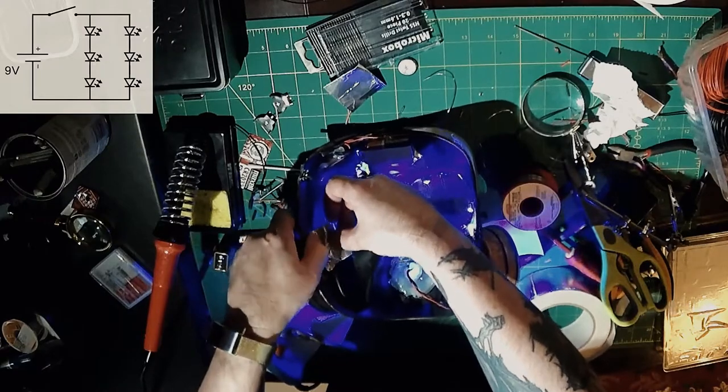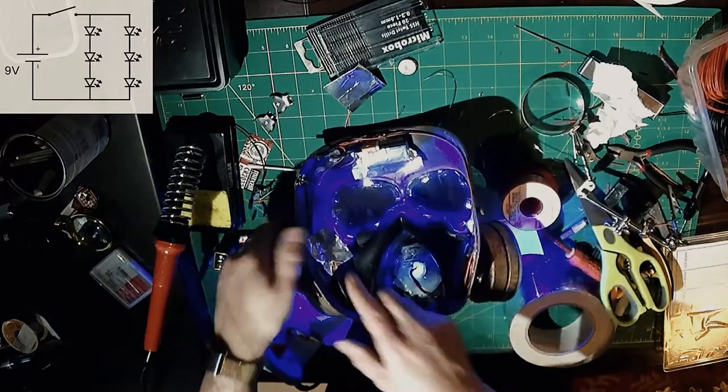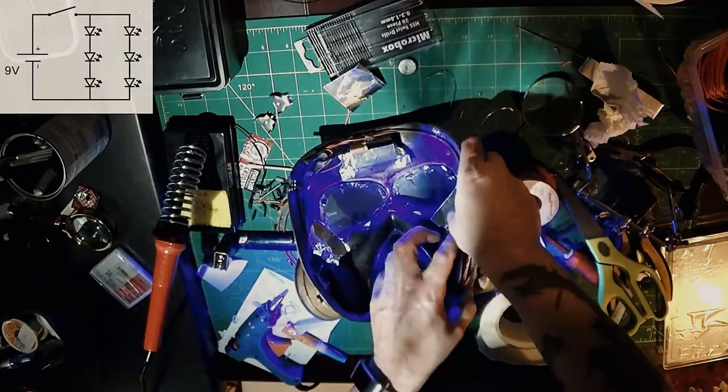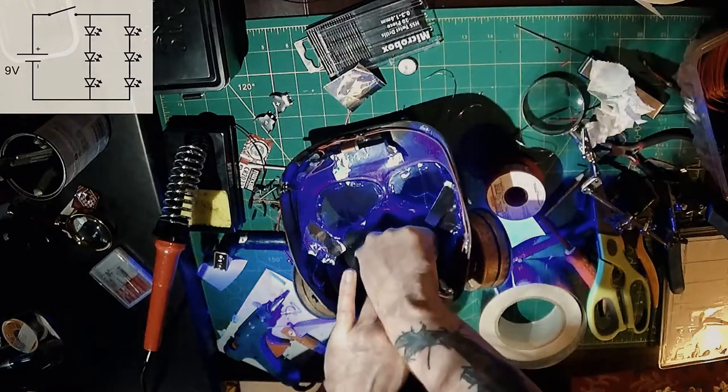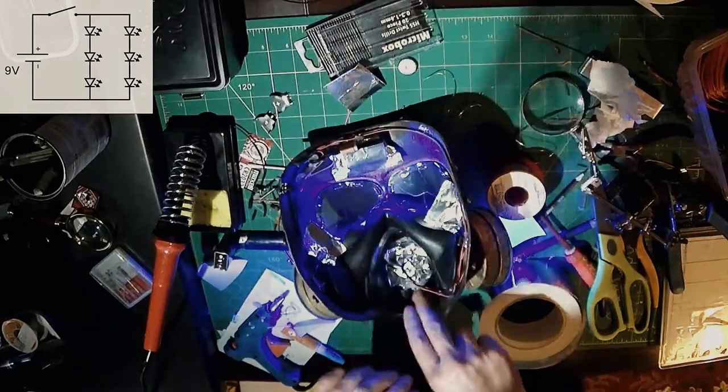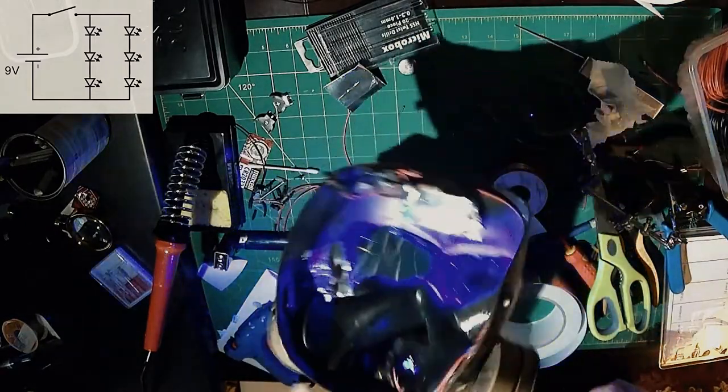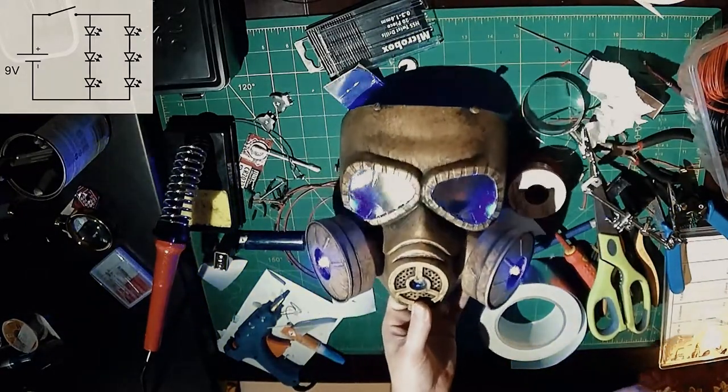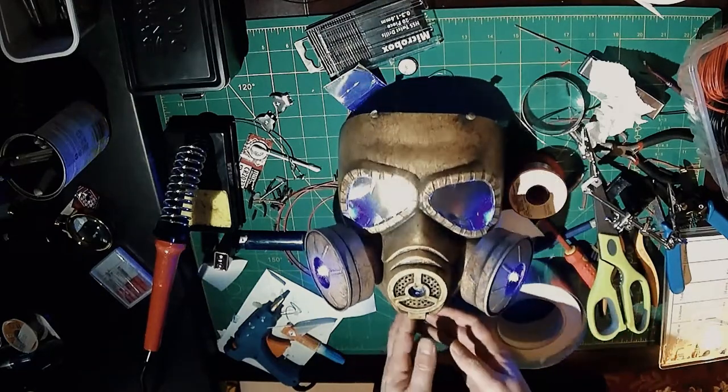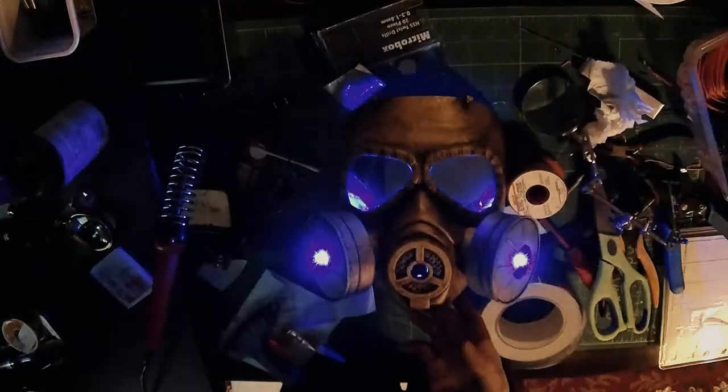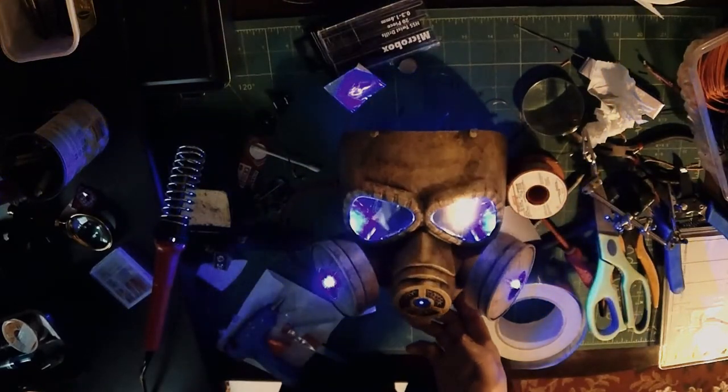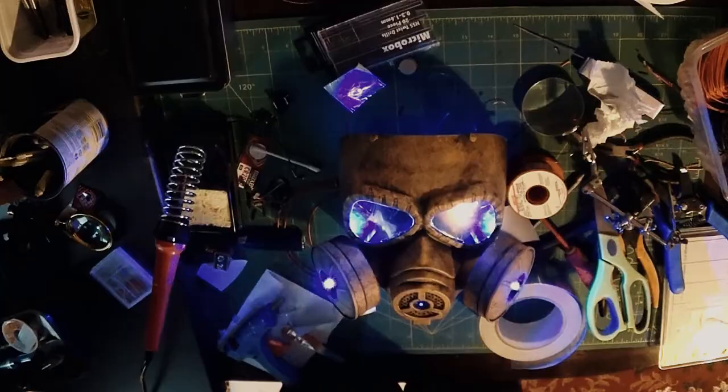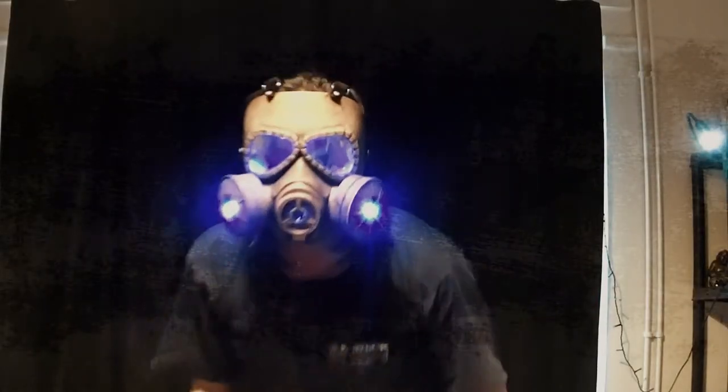I put some tin foil in there as well just to kind of shield your eyes when you're wearing the mask from those internal LEDs, plus to kind of reflect the light back out also, so maximizing the light which is emitted from those LEDs there. So there we are, job done. I'm quite pleased with the end result. So just trying it on there.